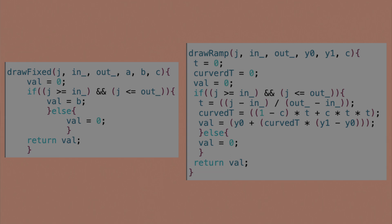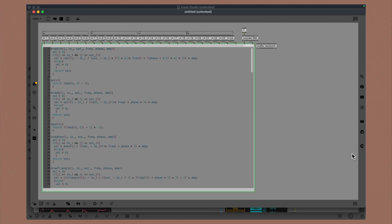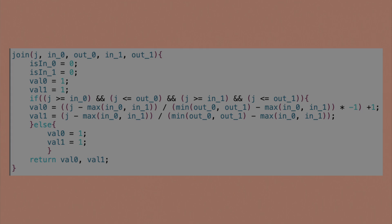One thing you can notice is how they still have the same number of inputs, but their meaning changes depending on which function we are calling. You can also see how inside the drawFix function, I ignore the A and C arguments. What's going to tell us which function we're going to pick is going to be the first input of every group of inputs, and we're going to pass this information to the selectFunction function. The last function defined is the join function, which lets us calculate the rescaled value when two functions overlap. Join takes two ranges as inputs, and if they overlap, it tells me how much I have to rescale the fadeout function and how much I need to rescale the fading function.